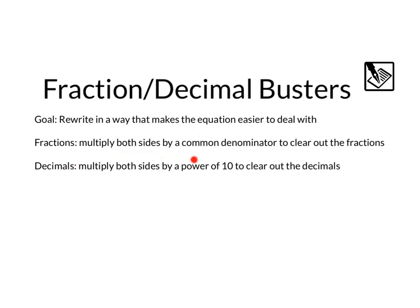Fractions, we want to multiply both sides by a common denominator to clear the fraction out. For decimals, we can multiply both sides by a power of 10 to clear the decimals out. Let's get into a couple examples.